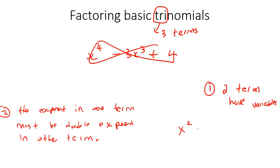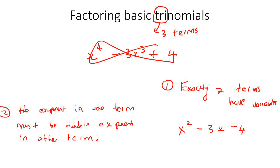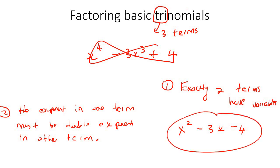But what if I do something like x squared take away 3x take away 4? Two terms have variables - yes. It must be exactly two terms, not less and not more. And then the exponent in the one term must be double the exponent in the other term - yes, here's a two and this one's a one. So this is a trinomial. And what I'm going to teach you in this lesson is how to factorize trinomials.